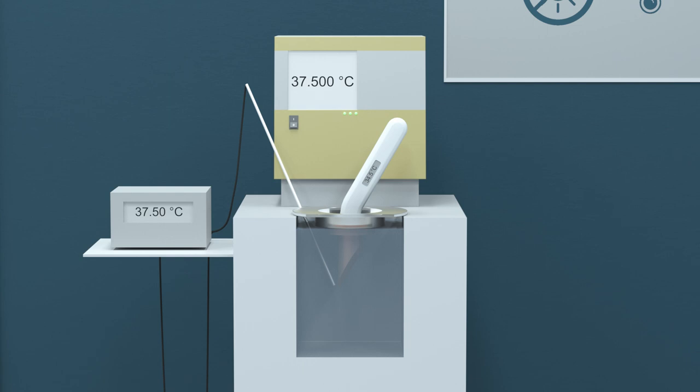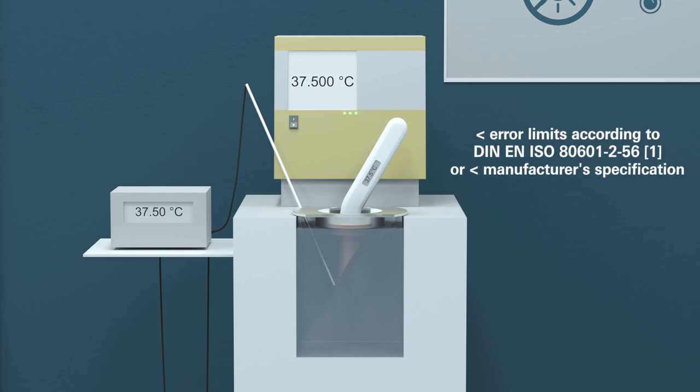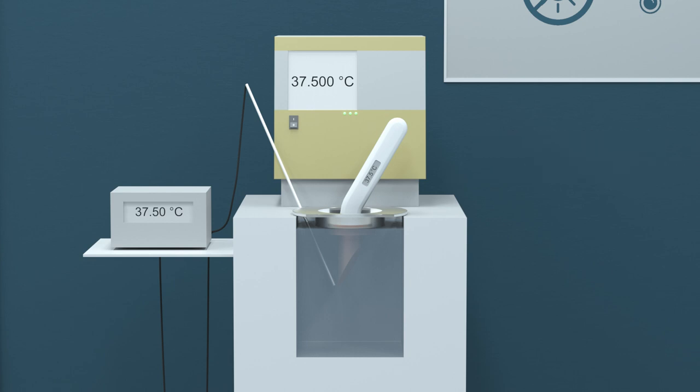Compare the temperature indicated by the ear thermometer with the temperature of the reference cavity radiator. The difference between the indicated and the reference temperatures must be within the error limits prescribed by DIN EN ISO 80601 Part 2-56 or the manufacturer's specification. If this is the case, you can trust the ear thermometer to deliver reliable and accurate measurement results.